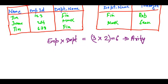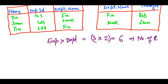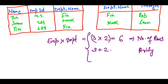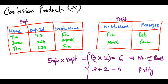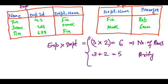So the cross product of Employee and Department would have six rows. The arity of the cross product table is the sum of the columns: three plus two equals five. We have three columns in Employee — name, employee ID, department name — and two columns in Department — department name and manager.